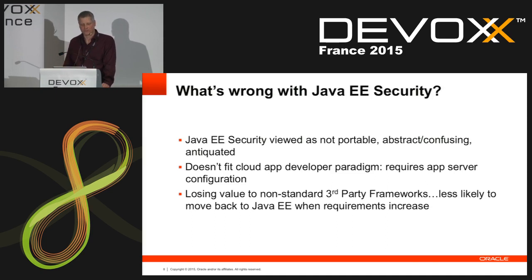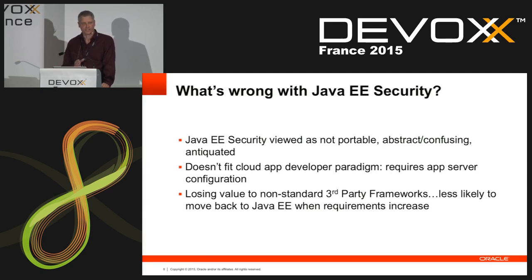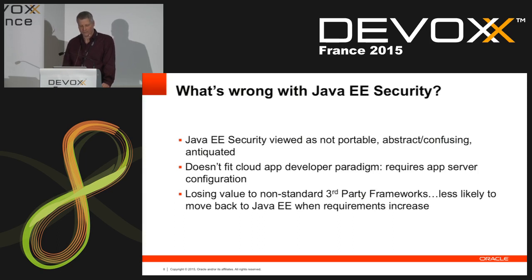Java EE security has been viewed as being not portable. It's kind of abstract. The APIs are all very confusing, and it's also antiquated — a lot of it was built back in the J2EE days. It doesn't really fit the modern cloud app developer paradigm. It usually requires app server configuration. And generally speaking, a lot of people have moved on to third-party frameworks. Once people go to Shiro or Spring Security, they're likely not going to come back to EE security, so it's generally losing value in the market.